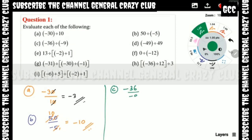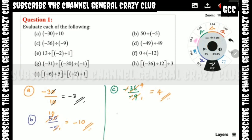Part C: minus 36 divided by minus 9. Minus divided by minus gives plus — same formula applies for division. So 9 fours are 36, giving the answer 4.